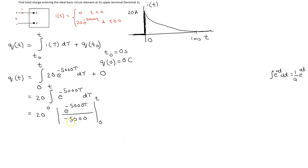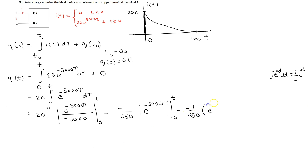Moving the constant out, we are left with minus 1 over 250 times e^(-5000τ) evaluated from 0 to t. Substituting the limits gives minus 1 over 250 times (e^(-5000t) minus e^0). Since e^0 equals 1, and moving the minus sign inside, we are left with (1/250)(1 minus e^(-5000t)).